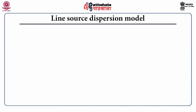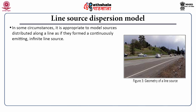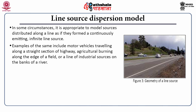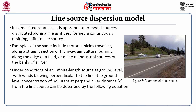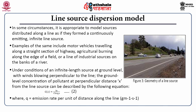In some circumstances, it is appropriate to model sources distributed along a line as if they formed a continuously emitting infinite line source. Examples include motor vehicles traveling along a straight section of highway, agricultural burning along the edge of a field, or a line of industrial sources on the bank of a river. Under conditions of an infinite length source at ground level with wind blowing perpendicular to the line, the ground level concentration of pollutant at perpendicular distance x from the line source is described by equation number 2, where Q is the emission rate per unit of distance along the line given in grams per second per meter.